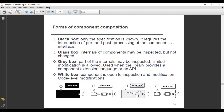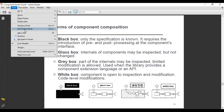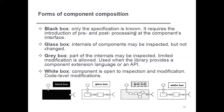I am taking the diagram into full-screen mode so that you may understand more easily. You can see the black box, the glass box, the gray box, and the white box — all four forms of component composition — displayed together in the diagram.